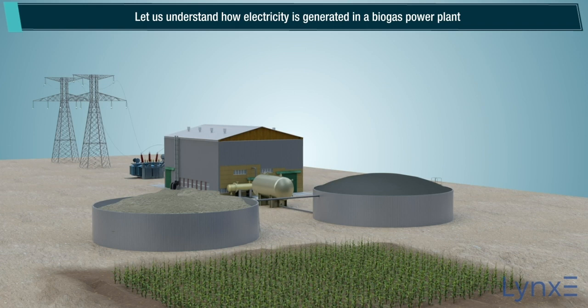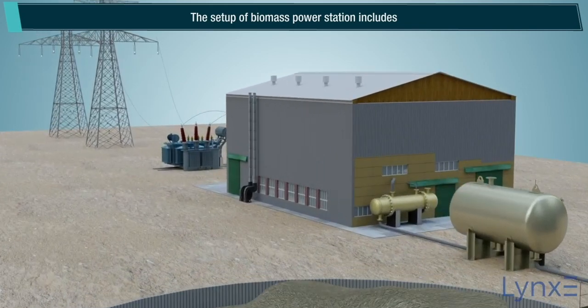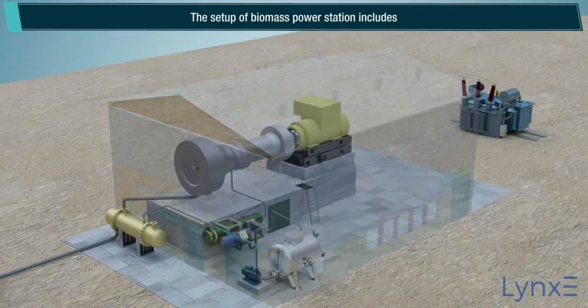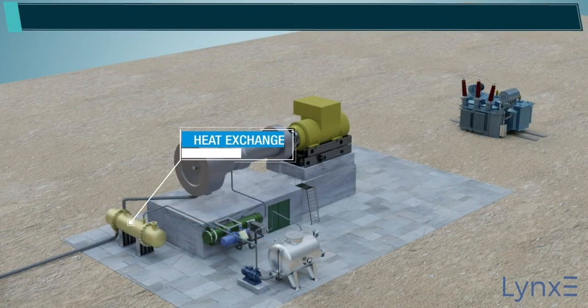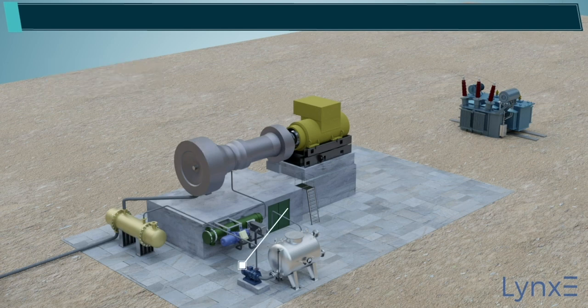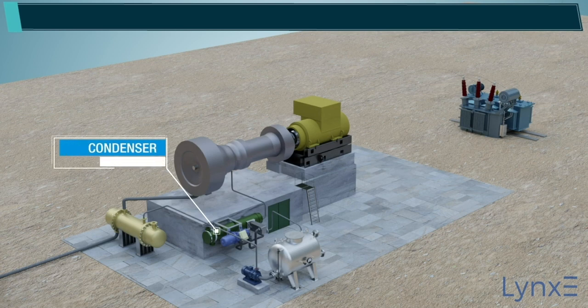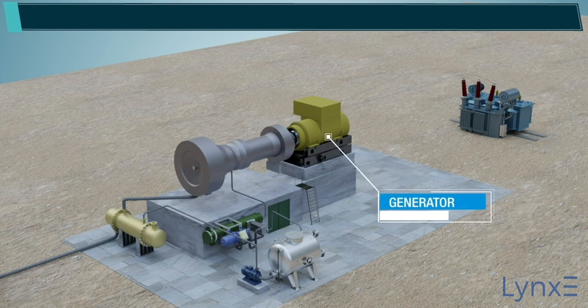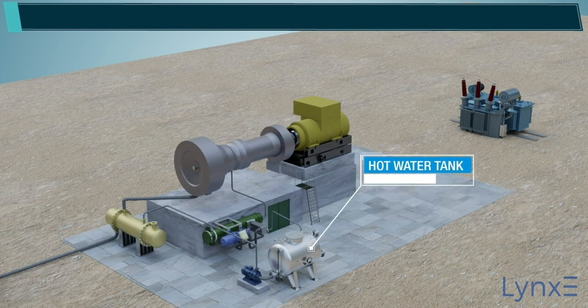Let us understand how electricity is generated in a biogas power plant. The setup of a biomass power station includes: 1. Heat exchanger or combustion chamber, 2. Steam turbine, 3. Pump, 4. Condenser, 5. Generator, 6. Hot water storage tank.